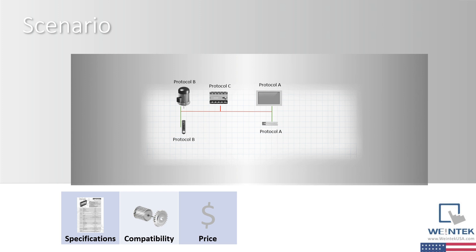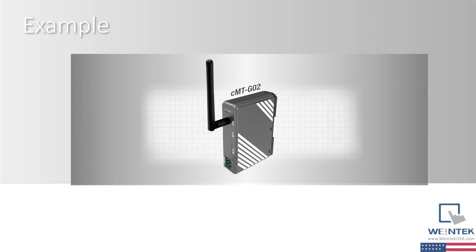So, to ensure that data from each device can be processed and managed by a controller or by a supervisory device on the control network, the system will require a protocol gateway. A protocol gateway comes equipped with the hardware and software necessary to exchange data between several devices within a specific system.